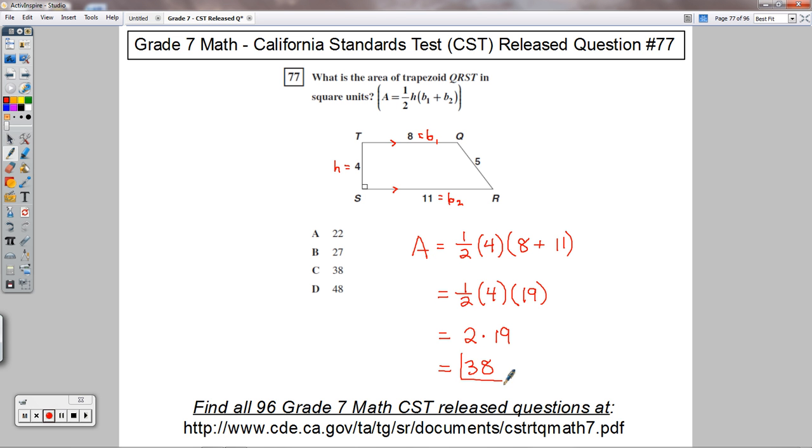This is in square units, so they don't actually give us a unit. I'm just going to say thirty-eight. Then we would say units squared or square units if we had units with that. Seventy-seven is choice C.